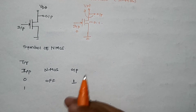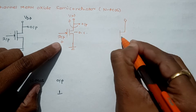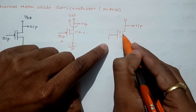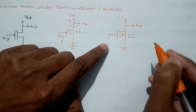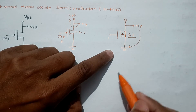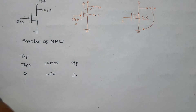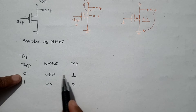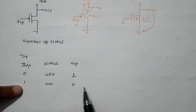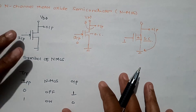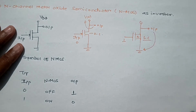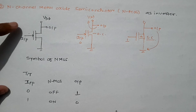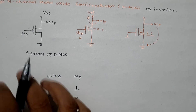In the reverse case, when input is 1, the NMOS will be ON — short circuit. When it is short-circuited, the output is connected to ground, so we get output 0. Again, when input is 0 we get output 1, and when input is 1 we get output 0 — meaning this circuit is also working as an inverter. So NMOS also functions as an inverter, just like PMOS.